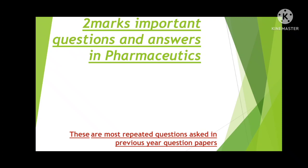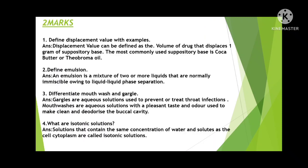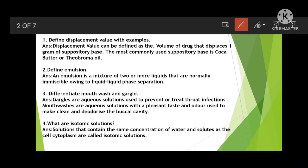Let's start. The first question: define displacement value. Displacement value can be defined as the volume of drug that displaces one gram of suppository base. The drug which displaces one gram of the suppository base is known as the displacement value. The most commonly used suppository base is cocoa butter, also known as theobroma oil.